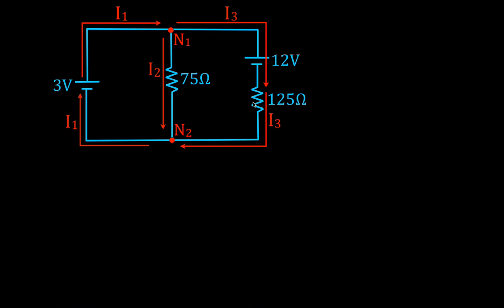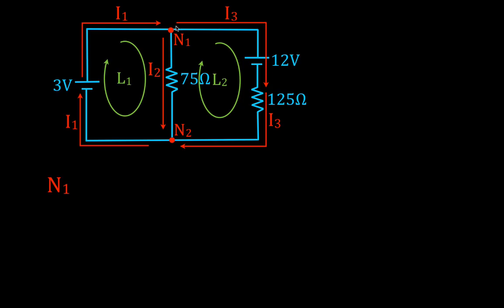Step three — we have to determine in which direction we're going to go around each of the loops when we apply the voltage rule and sum up the voltage drops and gains. We're going to go around loop one in the clockwise direction and loop two also in the clockwise direction. We also have an outer loop three, which we don't need for this video. Once again, the direction is very arbitrary — you can choose both clockwise, both counterclockwise, or one of each. It'll all work out in the math.